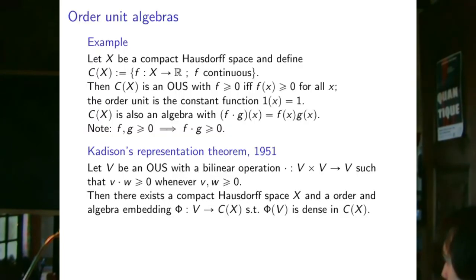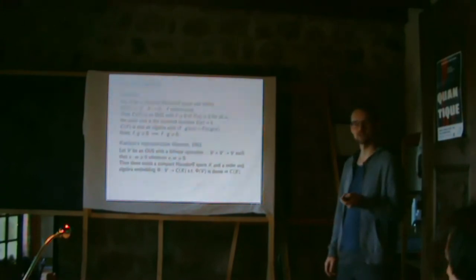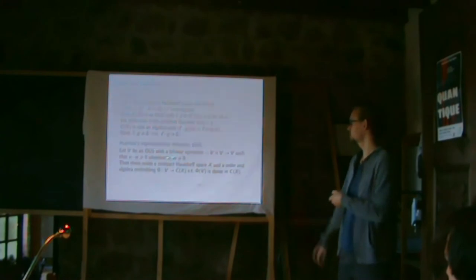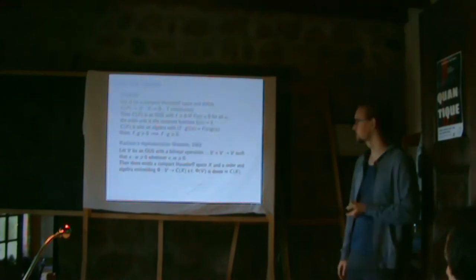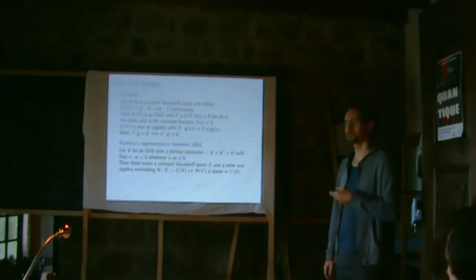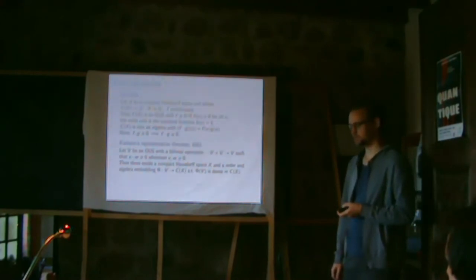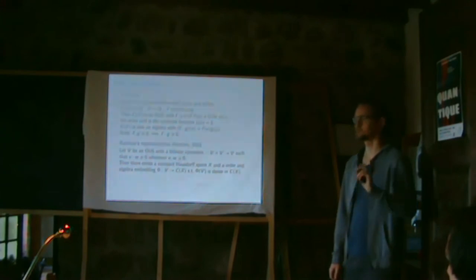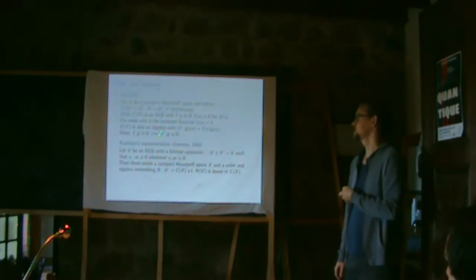A beautiful theorem — Kadison's representation theorem — says that if I have an order unit space with a bilinear operation that preserves positivity, then there must be a compact Hausdorff space X such that this vector space embeds densely into C(X). What's surprising is we assume neither associativity nor commutativity — only positivity-preservation — and this already forces such a nice structure. This is used in some quantum theory reconstructions.